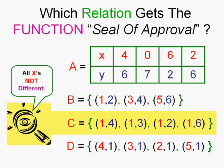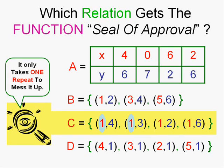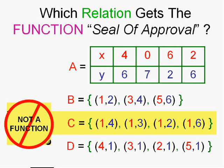In C, all the x's are not different. In fact, in this case, they're really not different. They're all the same. The number 1 gets mapped to various answers. One gets mapped to 4, one gets mapped to 3, and it only takes one repeat to mess it up. So, while this is a relation, it is not a function.